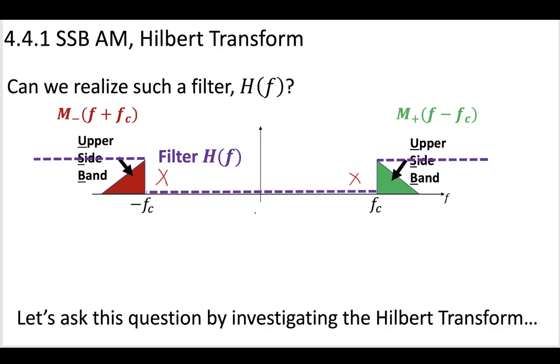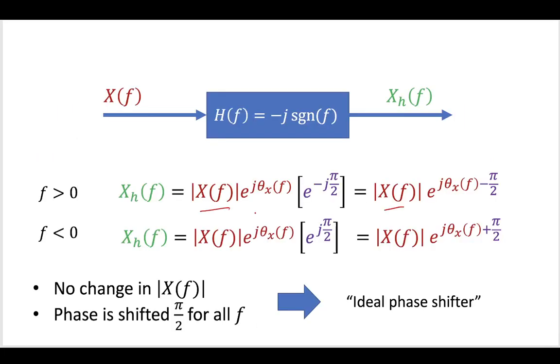So if we want to do this, if we want to remove those lower sidebands or the upper sidebands, we're going to need to use the Hilbert transform. The Hilbert transform is an ideal phase shifter that has no effect on the magnitude portions, and it has this -j sgn(f) definition.